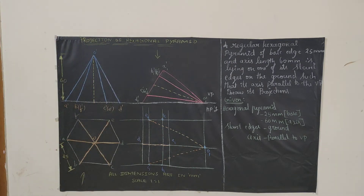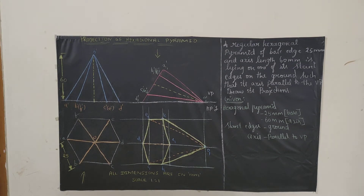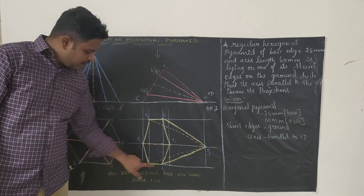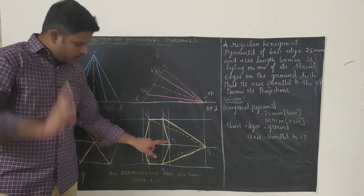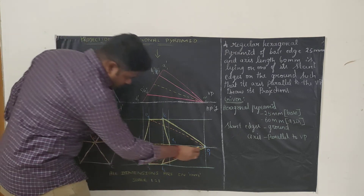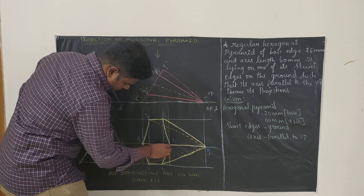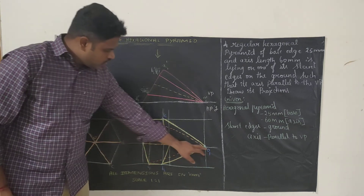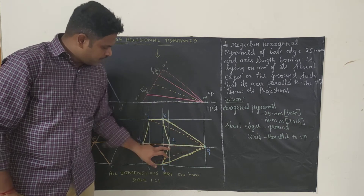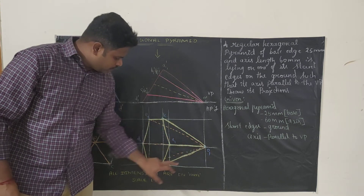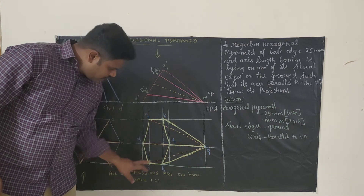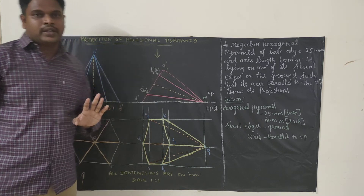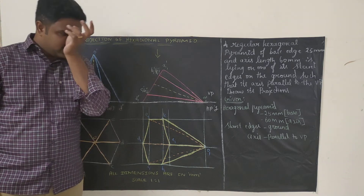Now join all the visible edges. Join A1 to B1, B1 to C1, C1 to D1, D1 to E1, E1 to F1, F1 to A1 for the base hexagon outline. Then join O1 to A1, O1 to F1, and O1 to B1 as visible slant edges. Draw O1 to E1 and O1 to C1 as hidden lines (dashed). A1 to D1 is not hidden. Erase all unwanted construction lines so your diagram looks clean and clear.